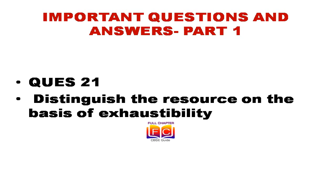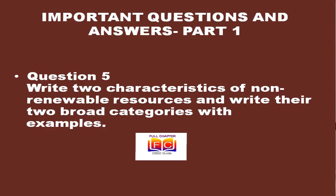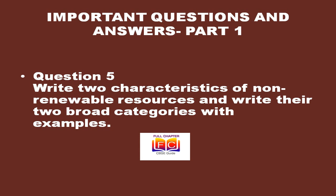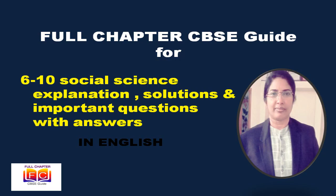Question 5: Classify resources on the basis of exhaustibility and give two examples of each. Renewable resources are those which can be renewed or reproduced by physical, chemical, and mechanical processes. Examples: water, wildlife, forest, solar energy, wind energy, etc. Non-renewable resources are those which once get exhausted cannot be remade — they take millions of years in their formation. Examples: minerals, fossil fuels, etc.